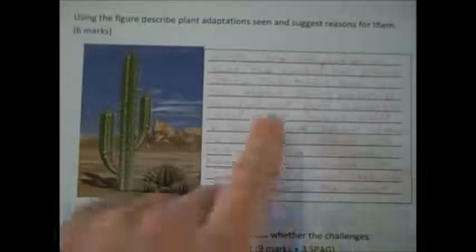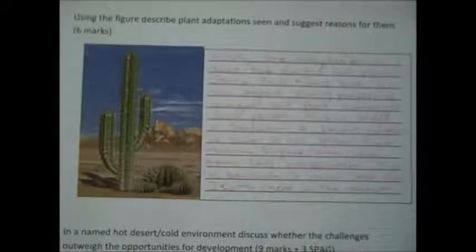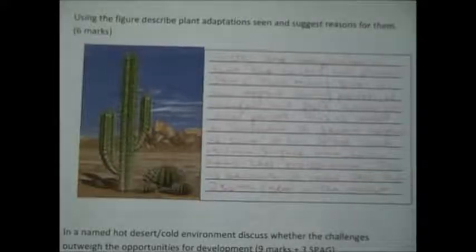So it's a six marker. The first bit is described, so I've described the adaptation and explained it. I've done that twice and used evidence: the succulent and the fact that it rains less than 250 millimetres a year.